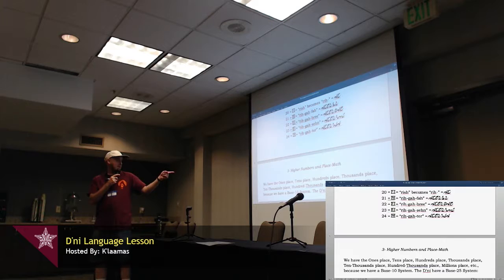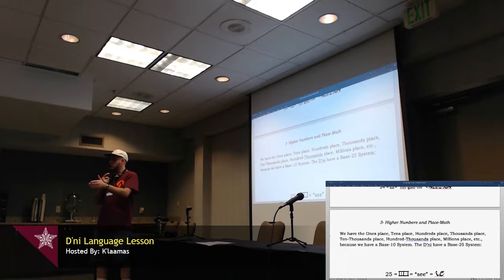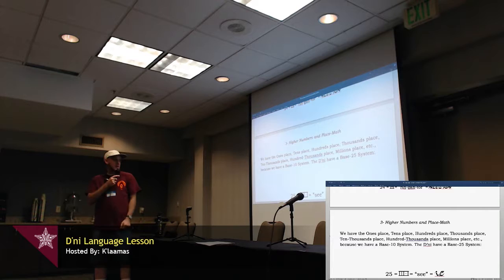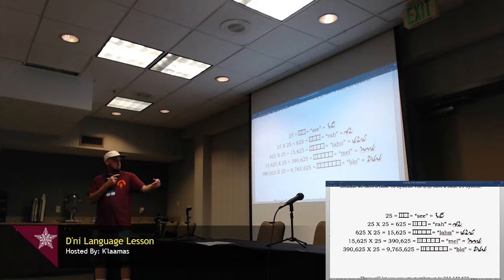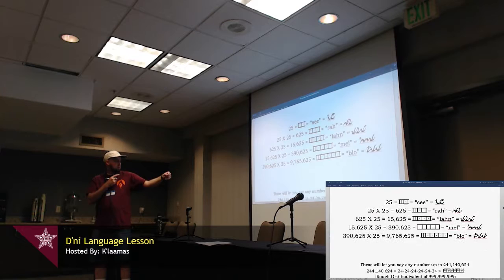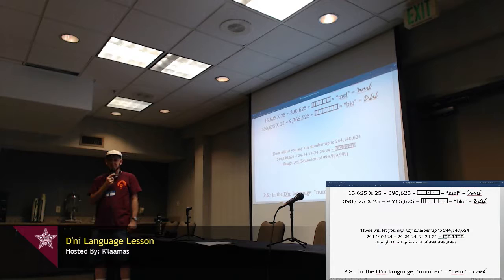For higher numbers and place math, like we have the ones, tens, hundreds, thousands, they have the 25s, 625s, 15,625s, and so on. 25 times 25 times 25 becomes very compact. So instead of 100,000, 10,000, they have Si, Ra, Lan, Mel, Blo. So with that, you can speak the numbers up to 244,140,624, which is kind of the equivalent of 999,999, blah, blah, blah. And the D'ni word for number is hahr.